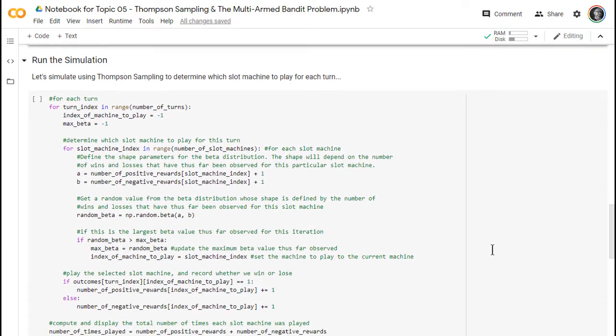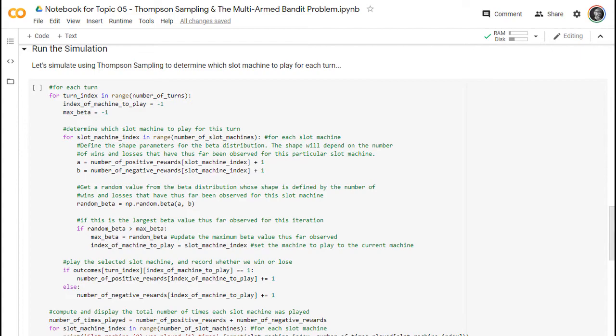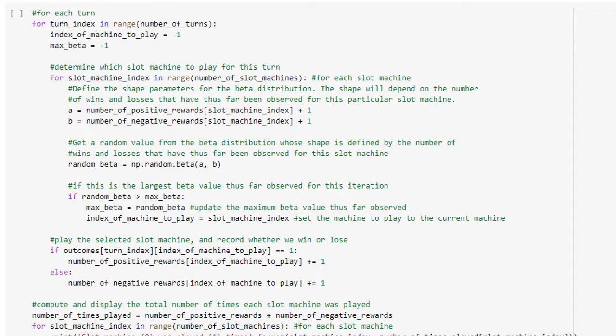Next, we'll simulate playing the slot machines 1,000 times, with the constraint that we can only play one slot machine per turn. To run the simulation, we use a set of nested for loops, with the outer loop running once for each turn, and the inner loop running once for each slot machine.